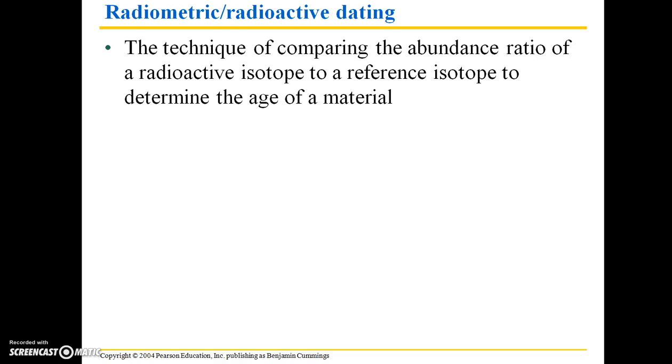For radiometric dating, which is also known as radioactive dating, it's a technique that compares the abundance ratio of a radioactive isotope to a reference isotope in order to determine the age of that material. There's a handy web link here if you would like to learn more about how radioactive dating works.